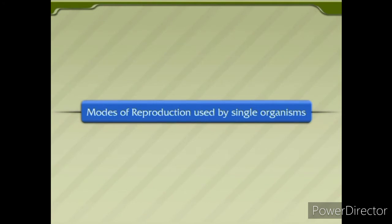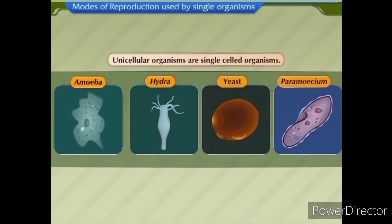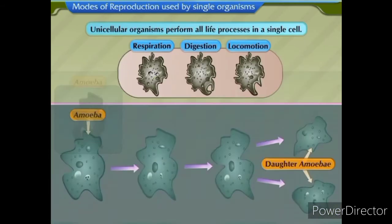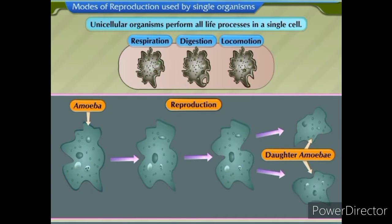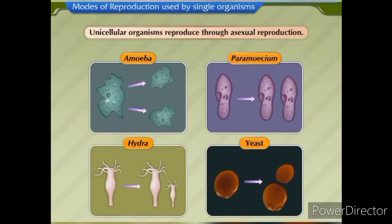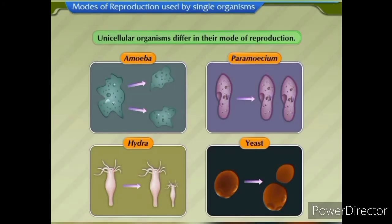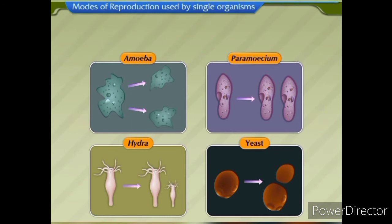Modes of Reproduction Used by Single Organisms. Unicellular organisms are single-celled organisms. In unicellular organisms, all the life processes, including reproduction, occur in a single cell. Unicellular organisms reproduce through asexual reproduction. In asexual reproduction, there is no union of sex cells or gametes, and the offsprings produced are from a single parent. Unicellular organisms differ in the mode by which they reproduce.